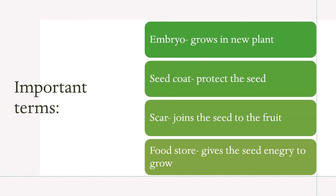Let's discuss about important terms. The embryo grows into a new plant. The seed coat protects the seed. The scar joins the seed to the fruit. The food store gives the seed energy to grow.